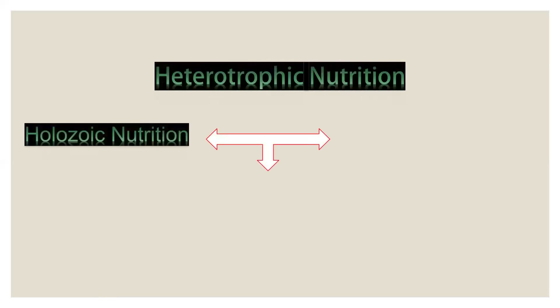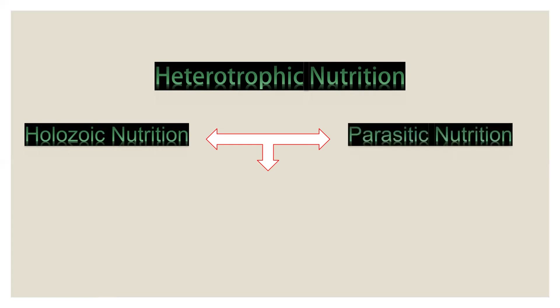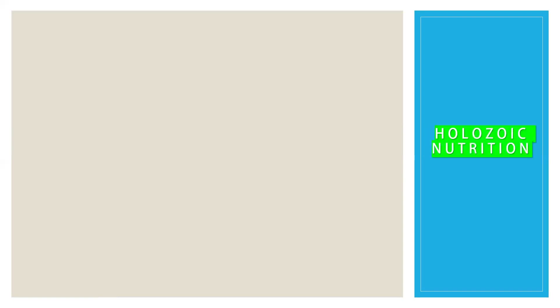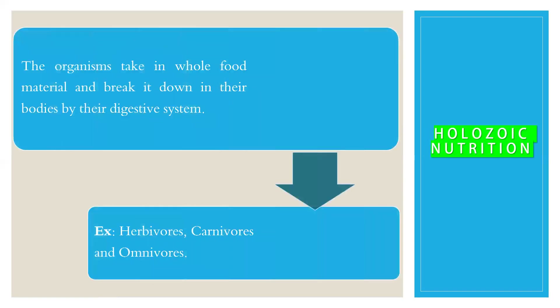There are three categories which come under heterotrophic nutrition: holozoic nutrition, parasitic nutrition, and saprophytic nutrition. Let us discuss the first one — holozoic nutrition. Here the organism intakes whole food material, and this food material is broken down into simpler substances by the digestive system.